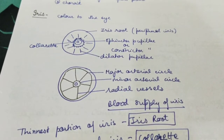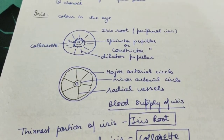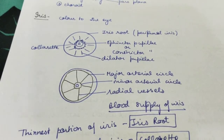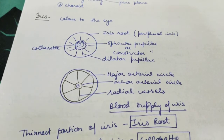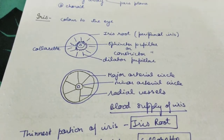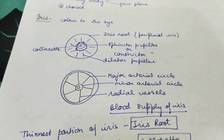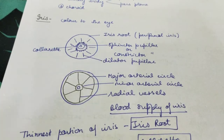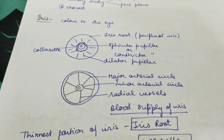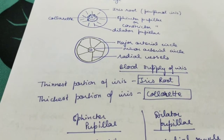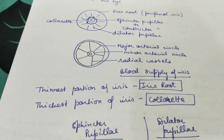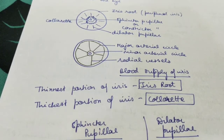Now the thinnest portion of the iris is the iris root, that is the peripheral iris, and the thickest portion of the iris is the colorate, that is the central iris.